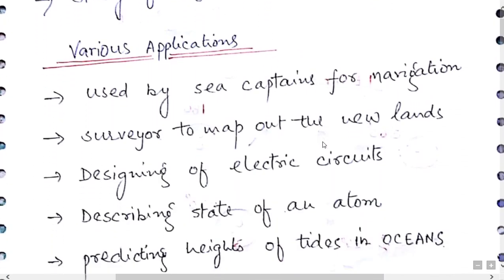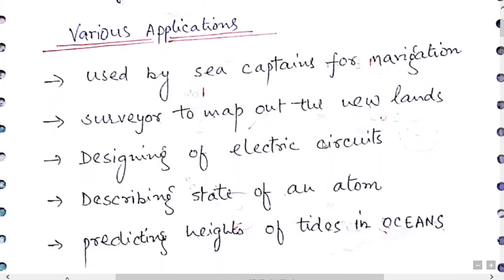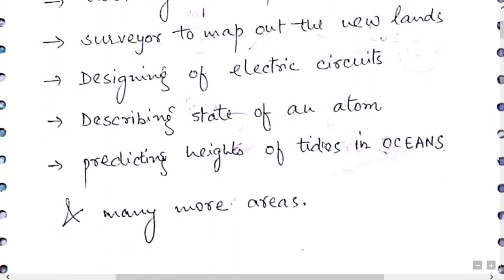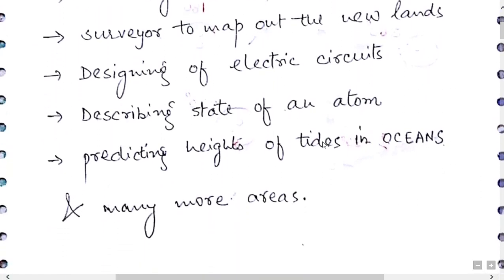There are various applications of trigonometry: it is used by sea captains for navigation, by surveyors in the civil engineering department to map out new lands, in designing electric circuits, describing the state of an atom, predicting the height of tides in oceans, and many more areas.